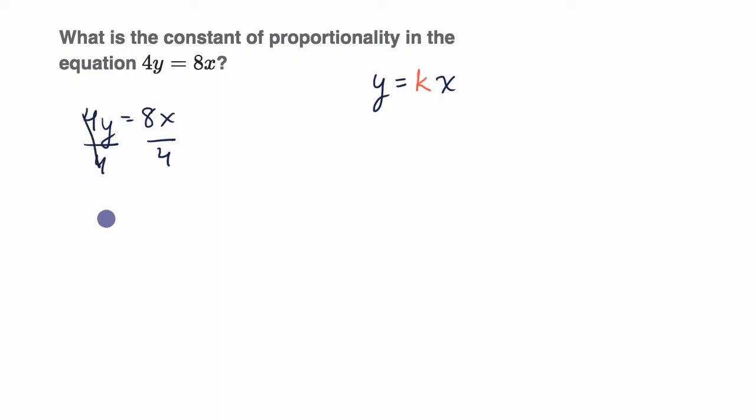And we are left with y equals 8 divided by 4, which is 2 times x. Now the constant of proportionality jumps out at us. To get y, we have to multiply x by 2. That is our constant of proportionality.